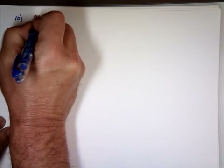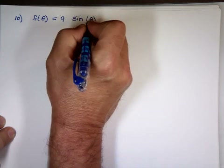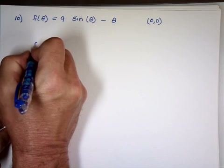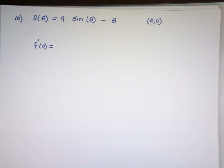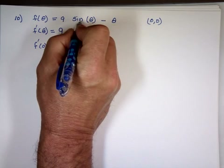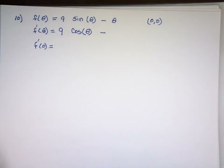Number 10. f of theta equals 9 sine theta minus theta. What is f prime at 0? I'll find f prime of theta first. The derivative of sine is cosine, so that's 9 cosine theta. Think of theta as x — the derivative of x is 1 — so minus 1.